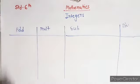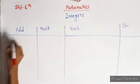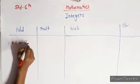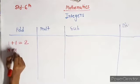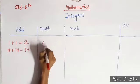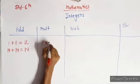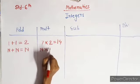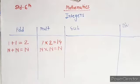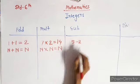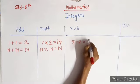Now we saw some examples. Addition: 1 plus 1 is equal to 2. Natural number plus natural number is equal to a natural number. Now multiplication: 7 into 2 is equal to 14. Natural number into natural number is equal to natural number. Now subtraction: 5 minus 2 is equal to 3.